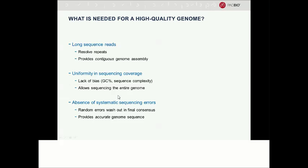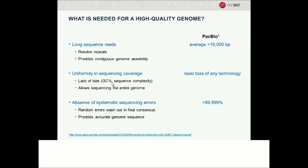Short read sequencing systems are quite good at the third criterion but not as good in the first two, with regard to shorter read length and bias toward extreme DNA sequence context. PacBio sequencing was aimed to excel in all three of those areas. We have the longest continuous reads in the industry, now averaging over 10,000 bases. It's been well described in the literature that PacBio sequencing has the least bias of any technology, being able to sequence even the most extreme sequence context. It has high consensus accuracy — individual read error rates are higher, but these errors are random, so they wash out.